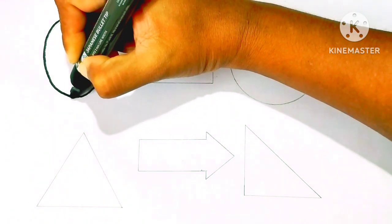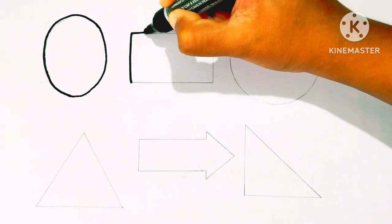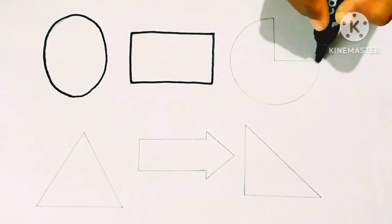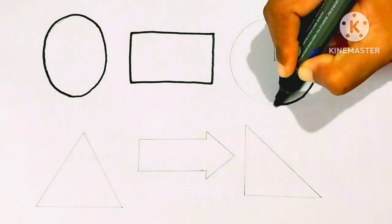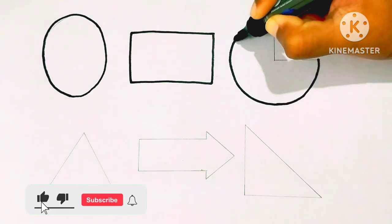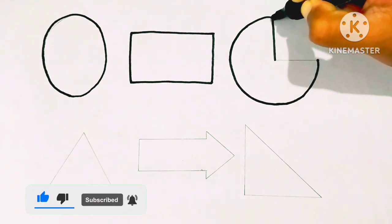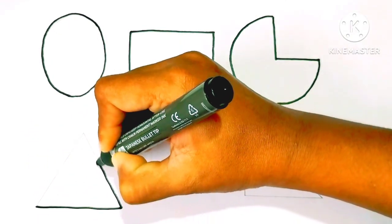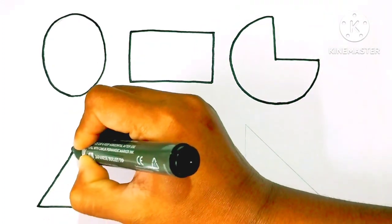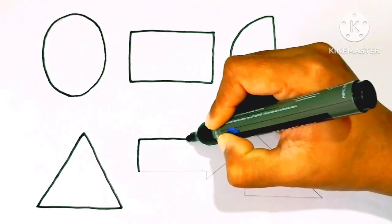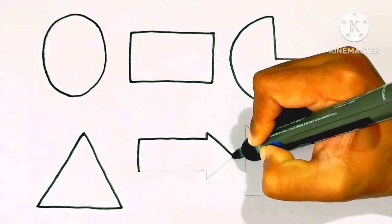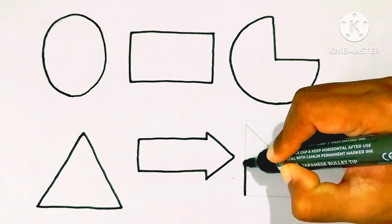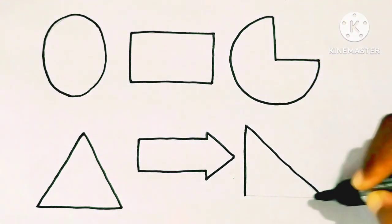Oval. Rectangle. Pi Pi. Triangle. Arrow. Right triangle.